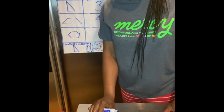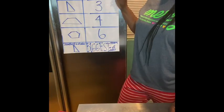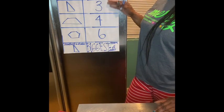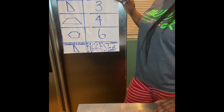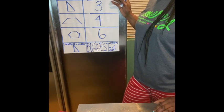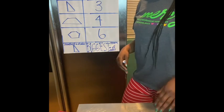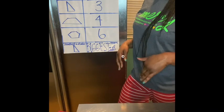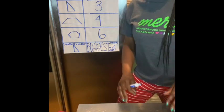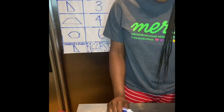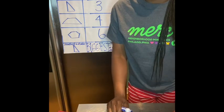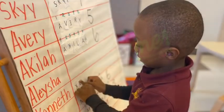Again, parents, this small group activity is focused on data analysis. If the child can see the visual of the number of sides that each shape has, it's easier for them to identify which shape has the smallest or largest amount of sides. I hope this small group activity helps you out. Like, comment, and subscribe. I'll see you next time. Thank you.